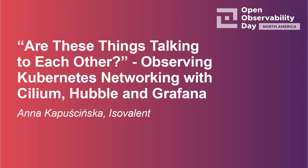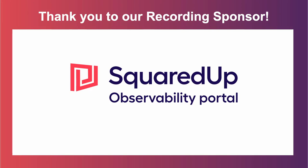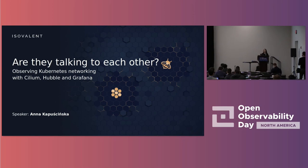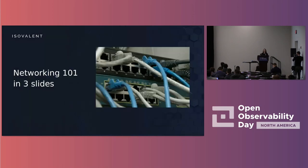Hello everyone, I'm Anna Kaproszczyńska. I work as a software engineer at Isovalent and today I will give a talk about networking and also observability. Let's start with networking because Isovalent is mostly known for a project called Cilium that uses eBPF for networking in Kubernetes and not only.